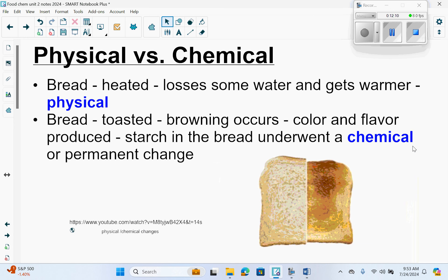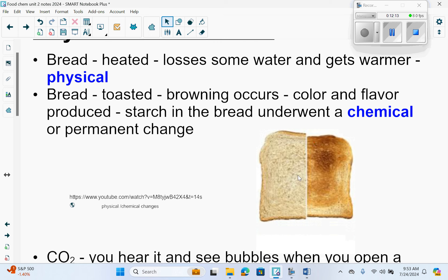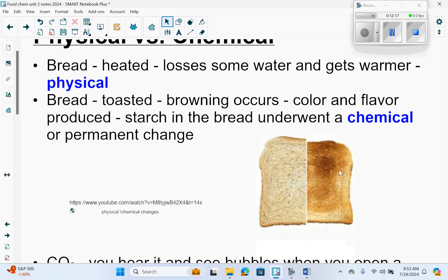Here are some examples of physical versus chemical changes with food. This picture shows the difference for bread. If you heat bread, maybe in an oven, the bread will lose some water and get warmer, but the bread is still bread. That's a physical change. If you let it sit and cool down, it'll absorb the water back and you can get that bread back the way it was. But if you toast the bread and see that browning occur—it's called the Maillard reaction—the color and flavor of the bread have changed. The starch in the bread underwent a chemical or permanent change. You can't untoast this and get the bread back the way it was.